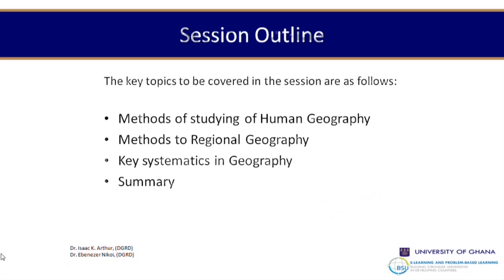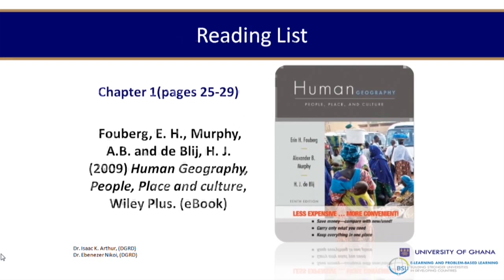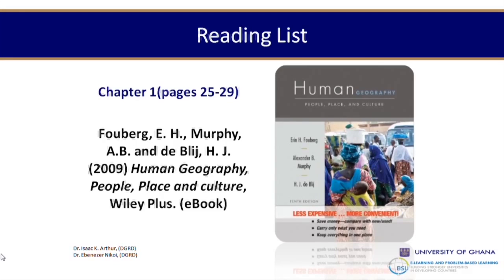For this session, the key topics to be covered are the methods for studying human geography, the methods to regional geography, and the key systematics in geography, and then we'll conclude with a summary. I would also encourage you to read chapter one of the textbook I talked about last week — pages 25 to 29. The book is authored by Fulberg, Murphy, and De Bly, and the title is Human Geography: People, Place, Culture, published by Wiley.